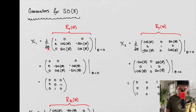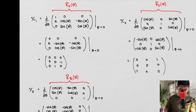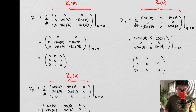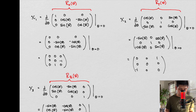Here's our rotation matrix. When we take the derivative, we get something that looks like this. And then setting our parameter equal to zero, we get something that looks like this. So this is what our first generator looks like.